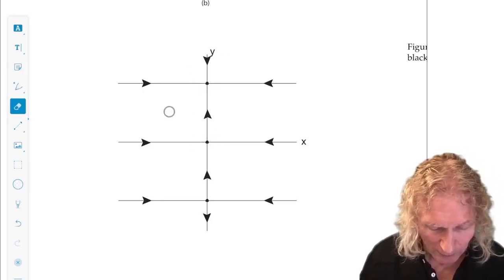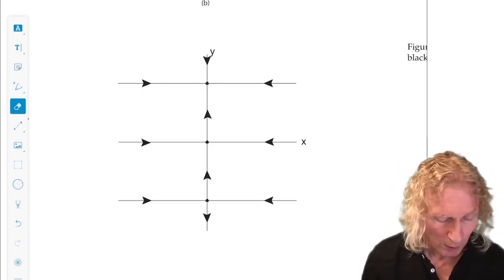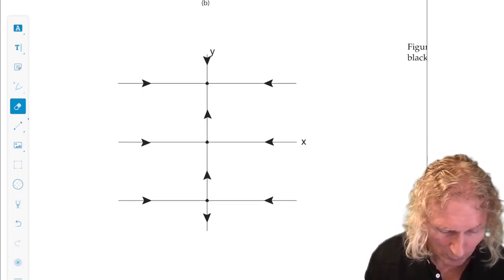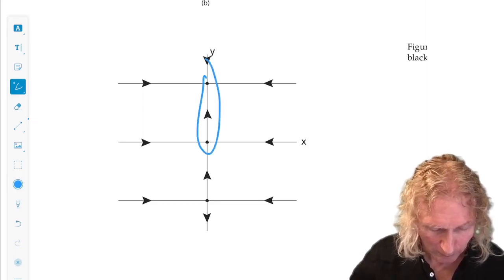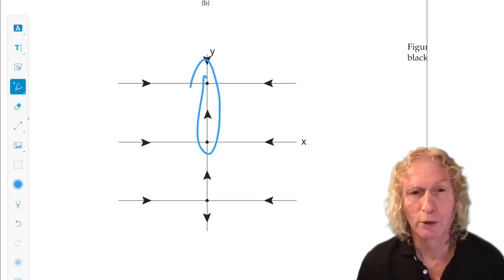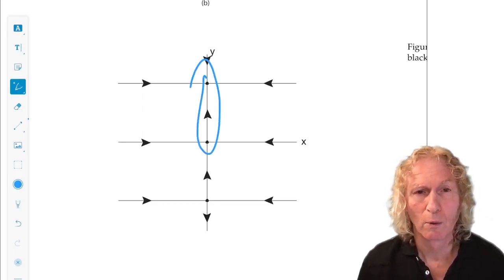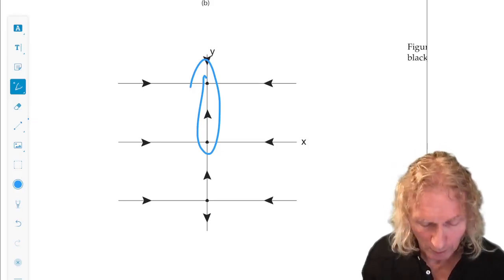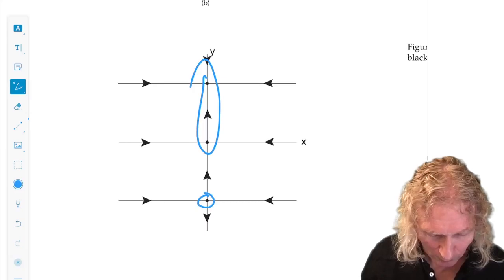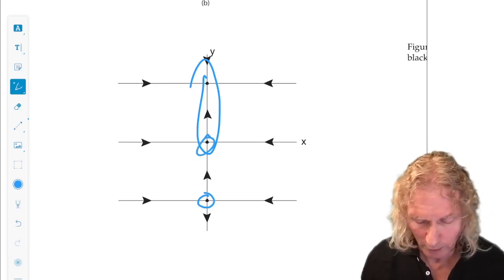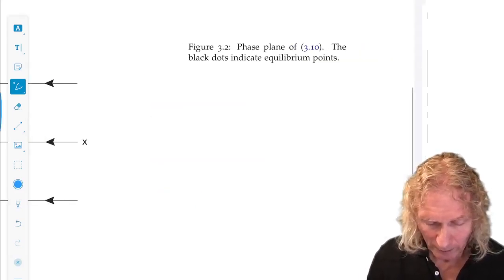And we see that there are two heteroclinic orbits, or heteroclinic connections, the trajectory connecting the origin to y equals 1, x equals 0, y equals 1, and x equals 0, y equals minus 1, also to the origin. So I just wanted to mention those. Now let's look at the problems.